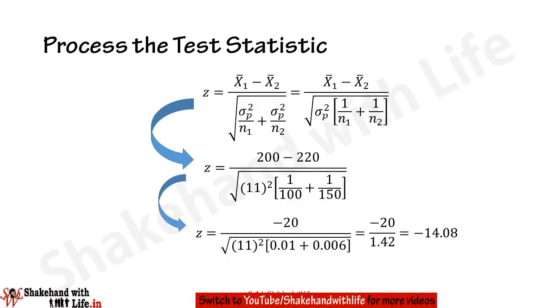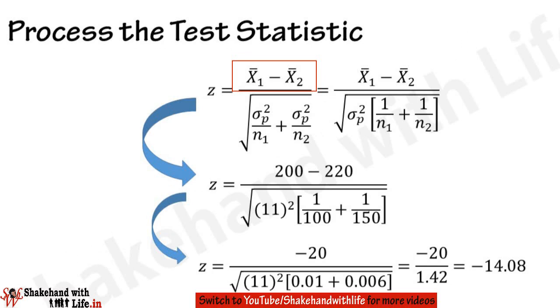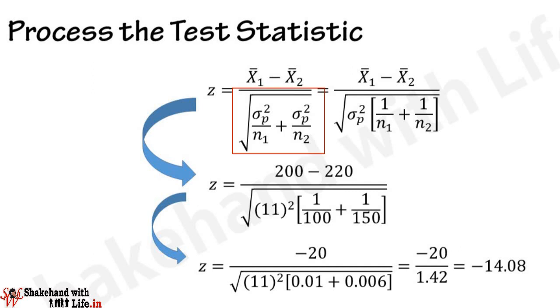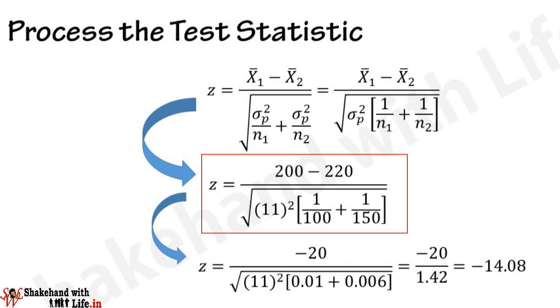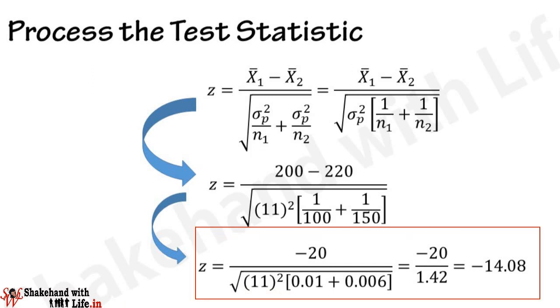Here the population variance is known and it is supposed that the samples are taken from the same population, hence we use the Z-test. The Z-statistic is Z = (x̄₁ − x̄₂) / √(σ_p²/n₁ + σ_p²/n₂). Replacing the values of x̄₁, x̄₂, σ_p, n₁, and n₂ and solving the equation, the Z value comes out as −14.08.